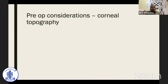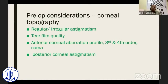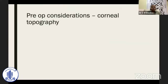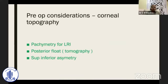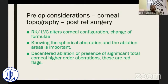Corneal topography has achieved a lot of importance in astigmatism management, along with keratometry, to find out whether the patient has regular or irregular astigmatism — including posterior corneal astigmatism, tear film quality, aberration profile, and pachymetry if you are interested in LRI. It also helps assess the science of ectasia. For post-refractive surgery cases, many more things need to be known.